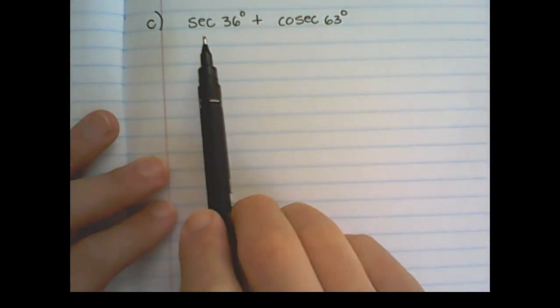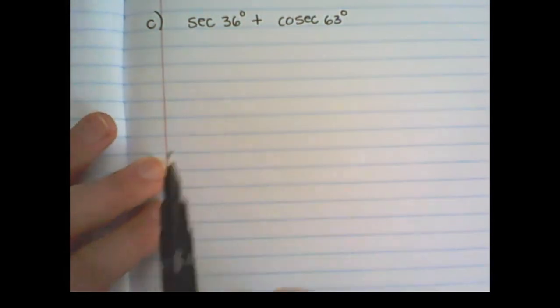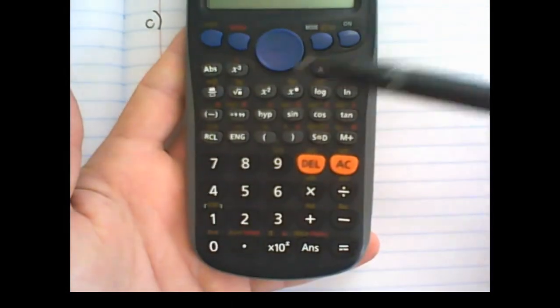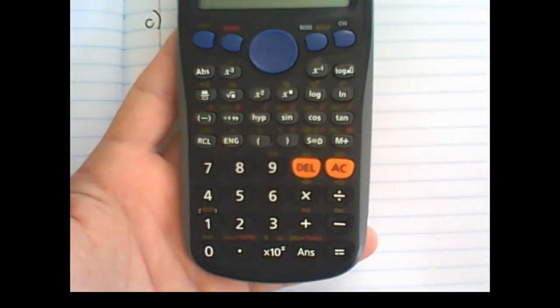Now let me show you how to work with the reciprocal functions on a calculator. So sec of 36 plus cosec of 63. If you look on your calculator, you would see there's no sec or cosec button.